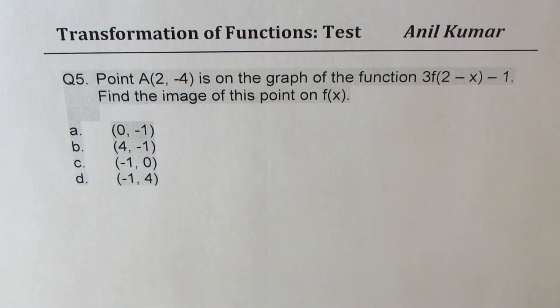And the last question here is, point A 2 minus 4 is on the graph of function 3f of 2 minus x minus 1. Find the image of this point on f of x. Now, once you have done, look into my suggestions.